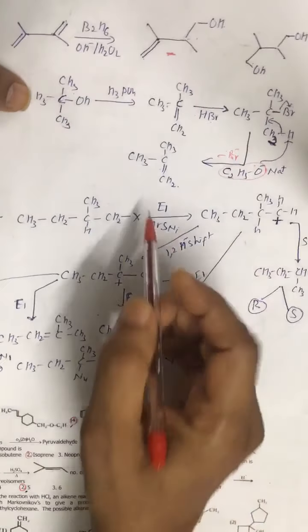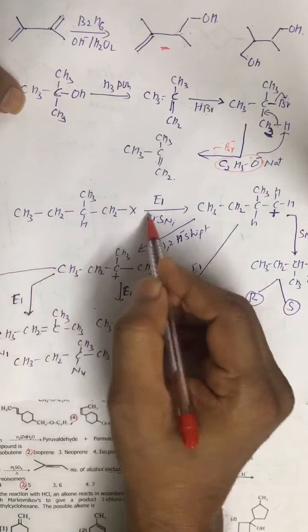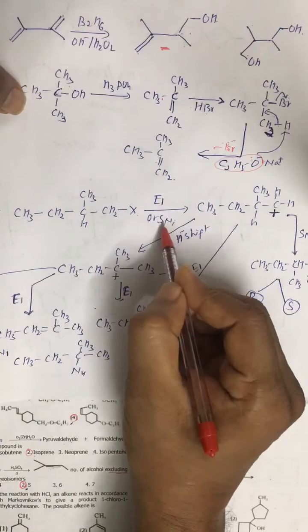If it is E1 or SN1, in the initial stage we get this kind of carbocation. SN1 is a two-step mechanism. In the first step we get a carbocation. Now suppose this carbocation is produced — a 1,2 shift takes place and due to 1,2 shift we get this kind of carbocation. This H gets shifted here.